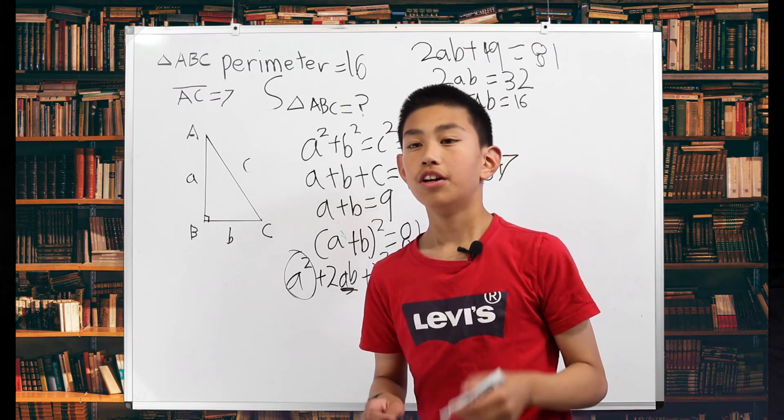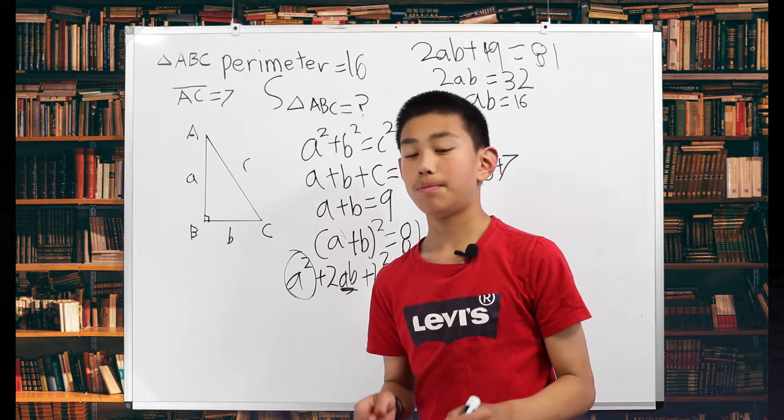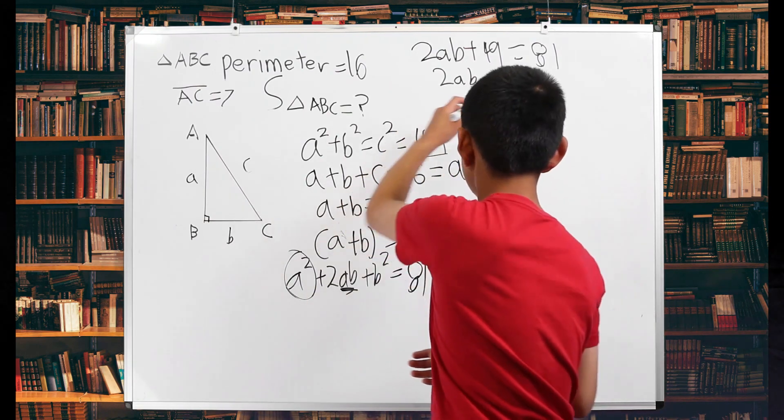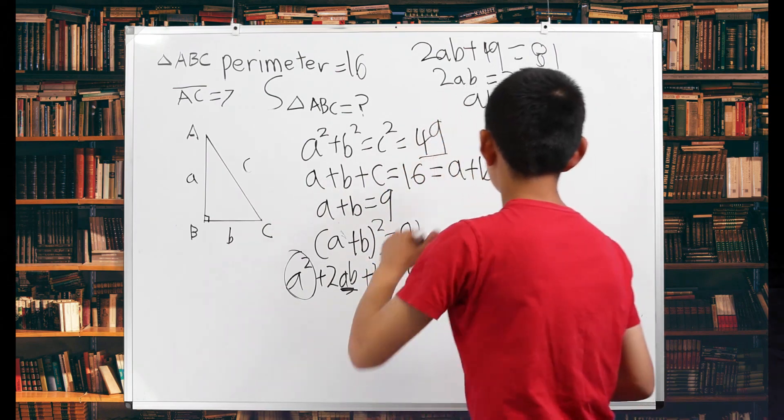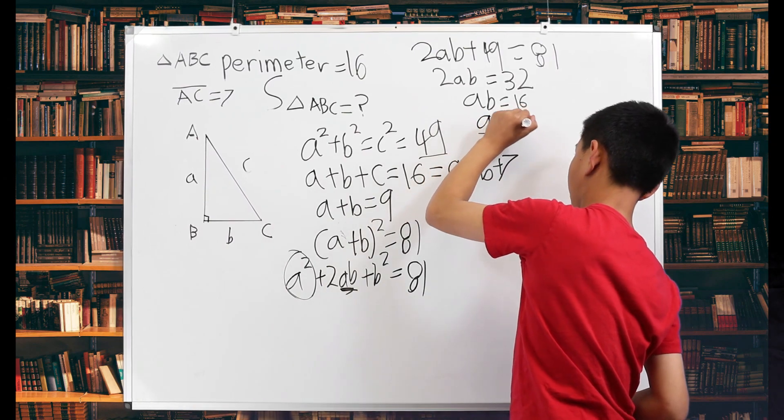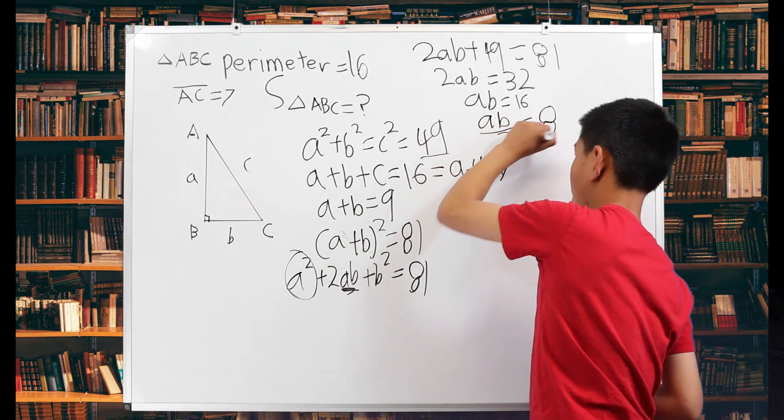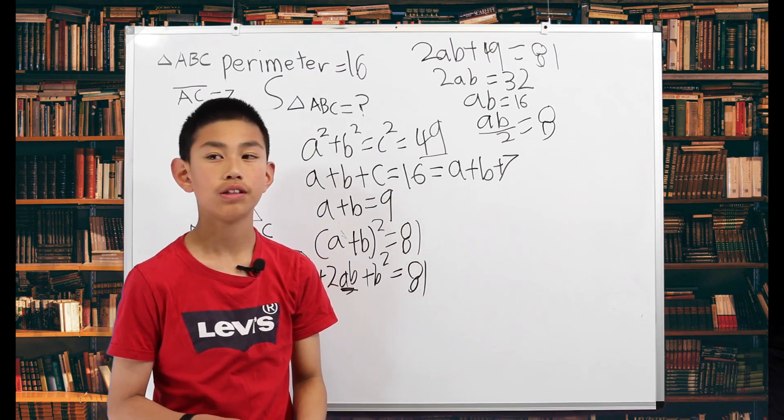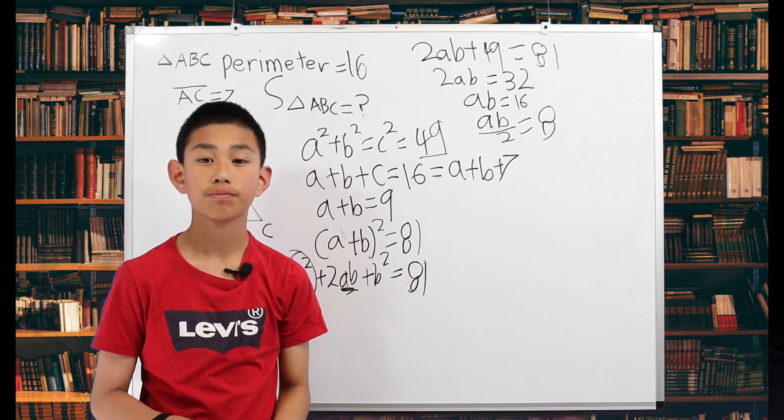So the area for it as a triangle would be this divided by 2. So AB over 2 is equal to 8. And that is our final area.